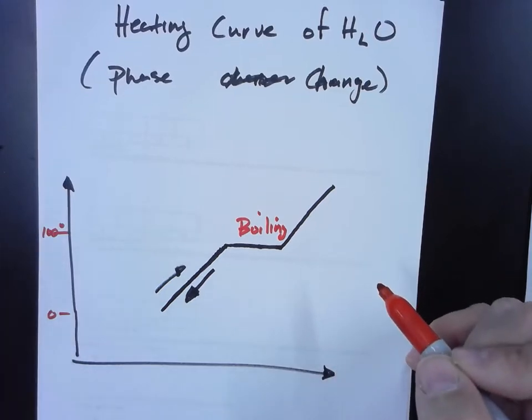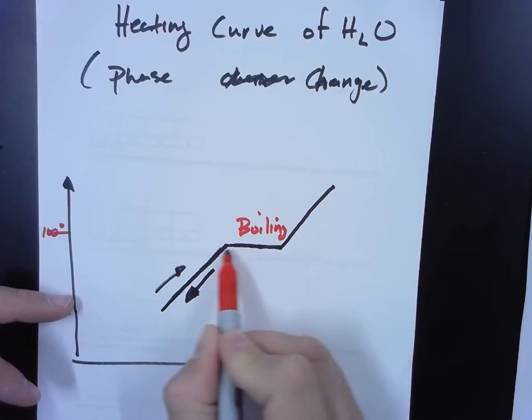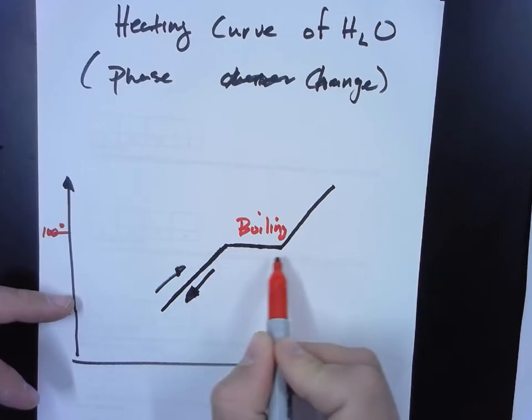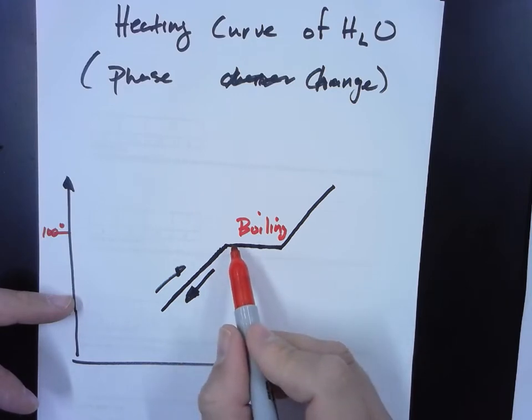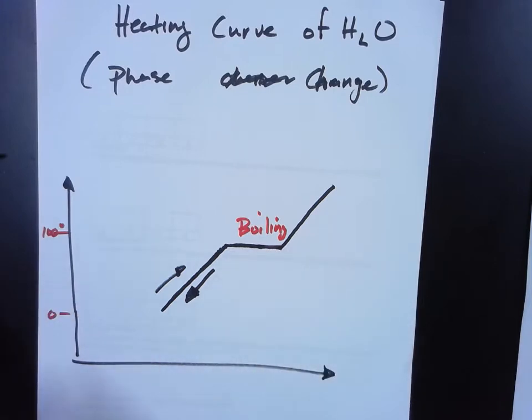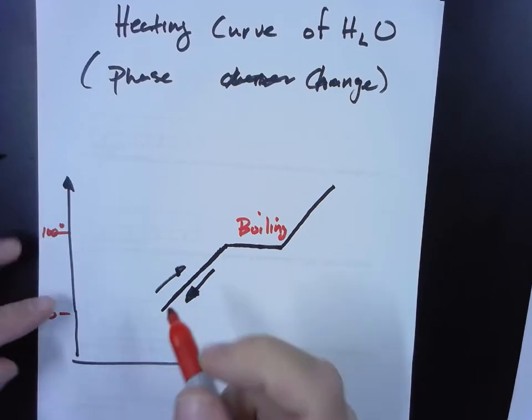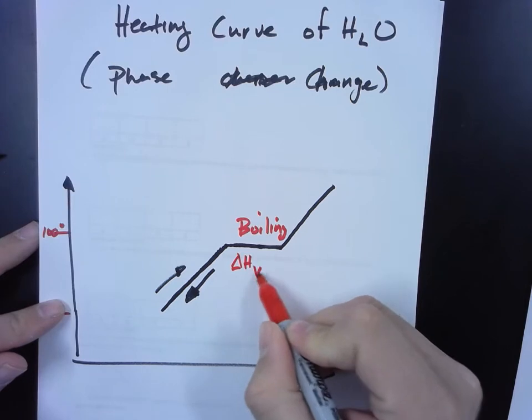So what you need to remember is this point right here where this curve goes flat—that's boiling water, that's where the water is boiling and the temperature is not changing. It's holding steady at 100 degrees. So how much energy is required to boil off all of this water? Well, you can do a simple calculation using something called the heat of vaporization.